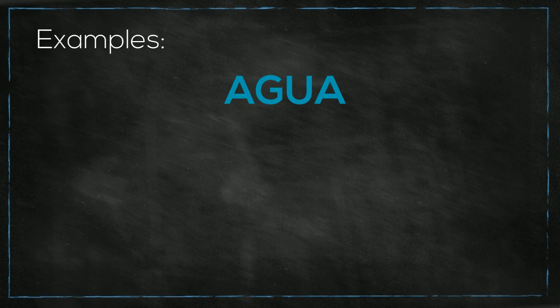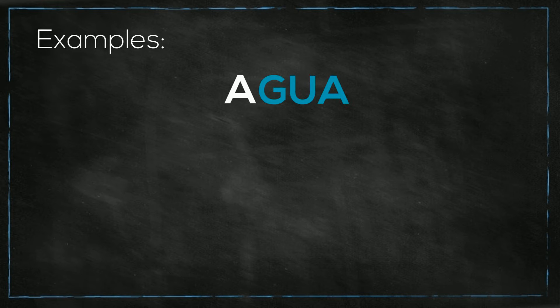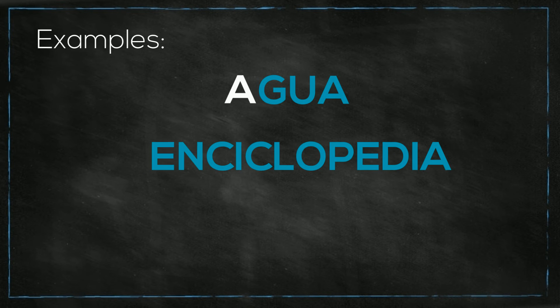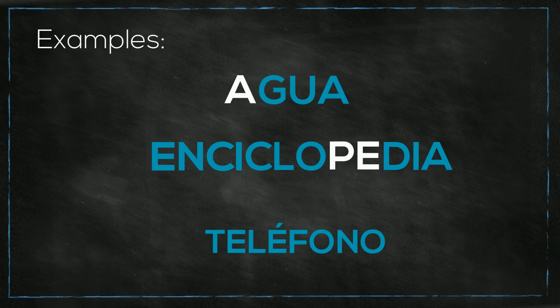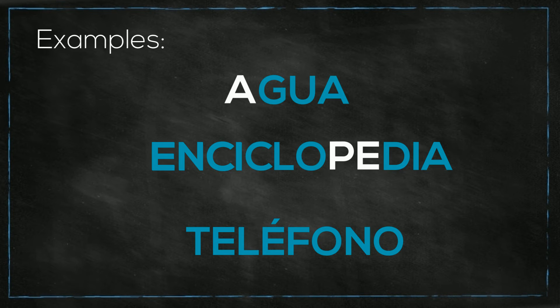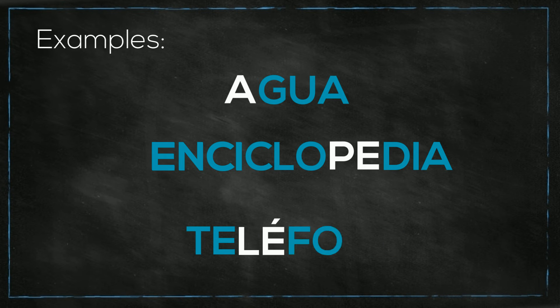Like the word agua has two syllables — agua. And enciclopedia has five syllables — enciclopedia. And teléfono has four — teléfono.